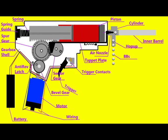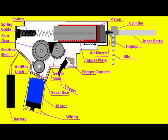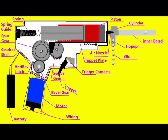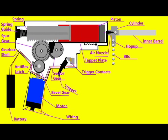When pulled back, the piston compresses the spring which is held in place by the spring guide and piston. At the same time the piston is pulled back, the tappet plate and air nozzle are pulled back, allowing for the BB to enter the hop up.